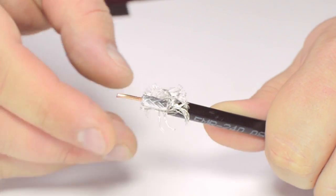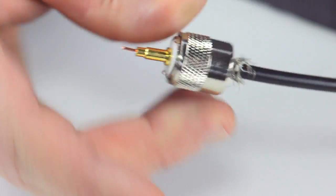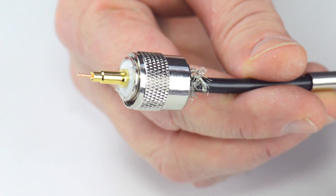Pull back the braided shield and insert the connector housing onto the cable. Make sure that the center conductor reaches up to or past the center pin.